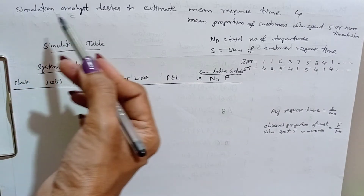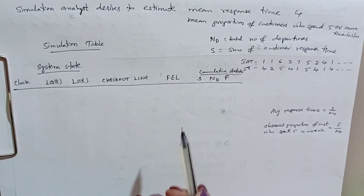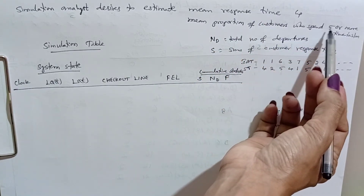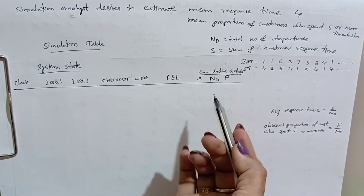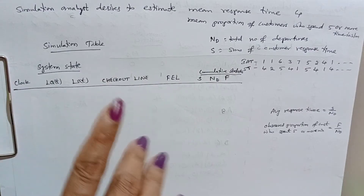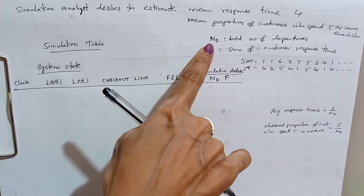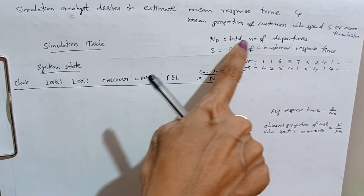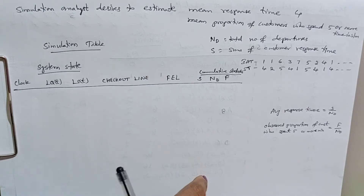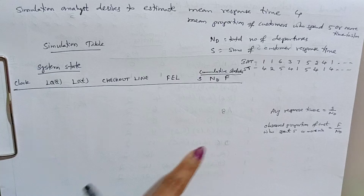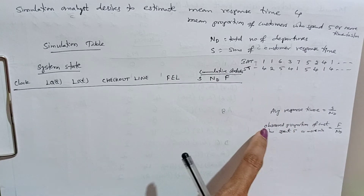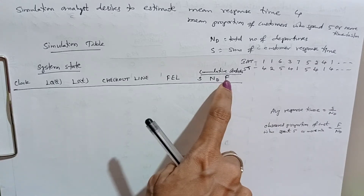The same problem but the simulation analyst desires to estimate other statistics: mean response time and mean proportion of customers who spent 5 or more than 5 minutes in the system. ND is nothing but total number of departures, how many customers are going out. S is the sum of all response times. From these statistics we can calculate average response time as S divided by ND, and observed proportion of customers who spent 5 or more minutes as F divided by ND.